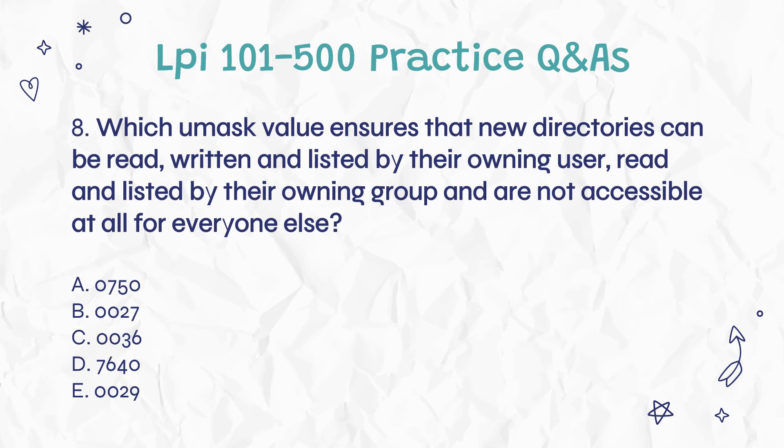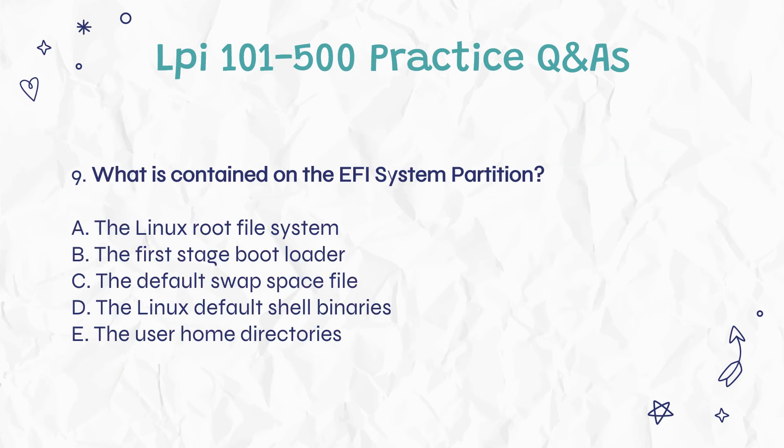Question 9: What is contained on the EFI system partition? a. The Linux root file system. b. The first stage bootloader. c. The default swap space file. d. The Linux default shell binaries. e. The user home directories.